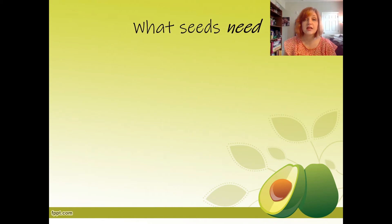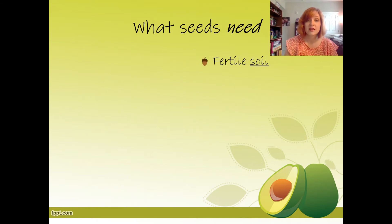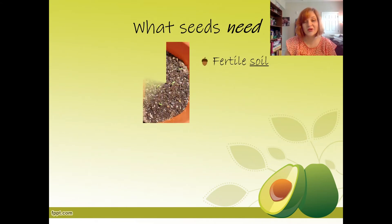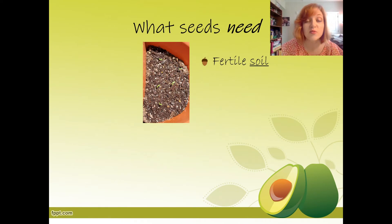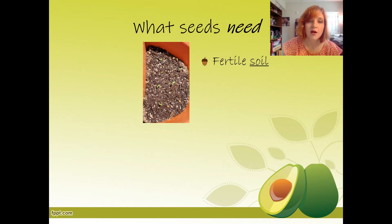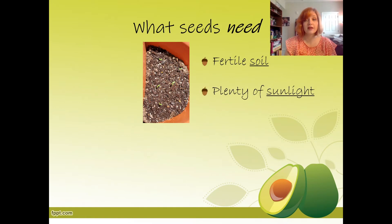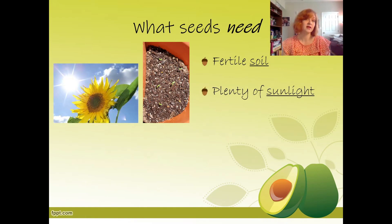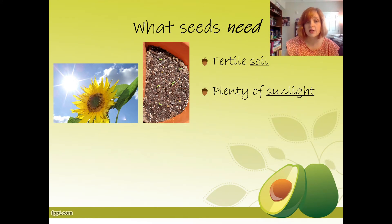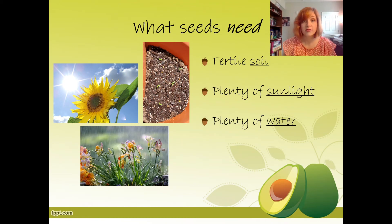What are the three things that seeds need? The first thing is fertile soil. This is a picture I took of my own plants growing — you can see the little tiny green leaves, the sprouts that came from the embryo of the seeds. They need plenty of sunlight because they need light to live and to do photosynthesis, which is how they produce their food. And they need plenty of water, because they use water to do photosynthesis to make their food.